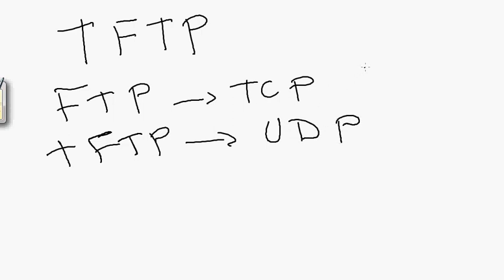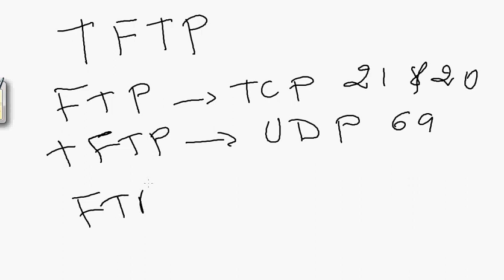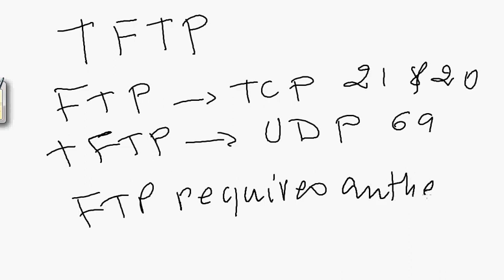FTP uses ports 21 and 20 for active FTP. The TFTP protocol uses UDP port 69. Another difference is that FTP needs a username and password — FTP requires authentication. So if you want to access an FTP server, you should have a username and password.